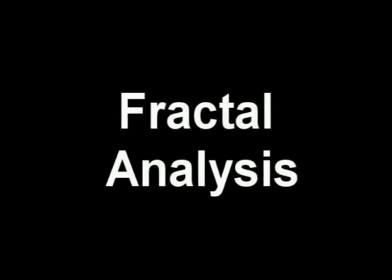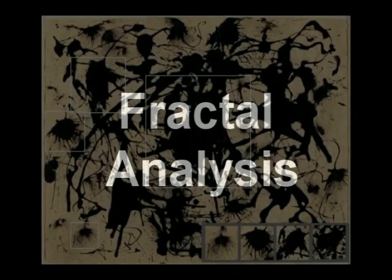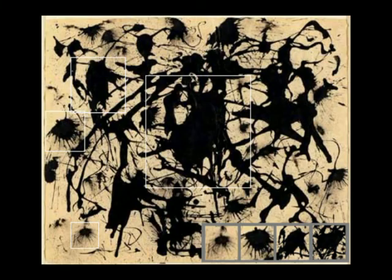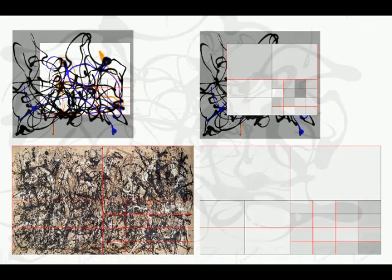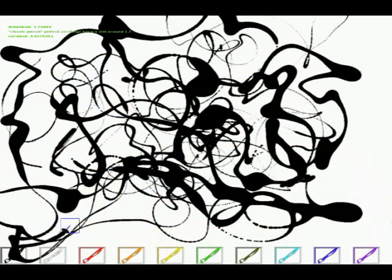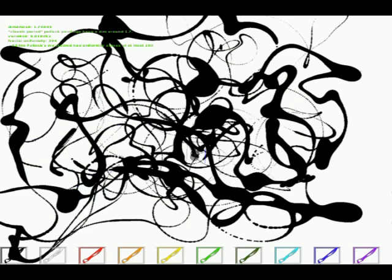Recent mathematical analysis indicates that the visually appealing nature of Pollock's paint patterns may be related to their fractal structure. We have implemented a collection of tools for quantifying such structures, and our program can give users real-time feedback on the fractal characteristics of their work.